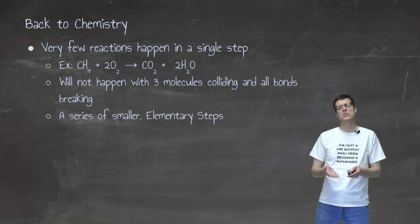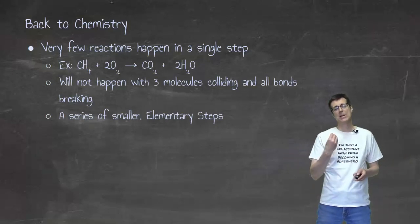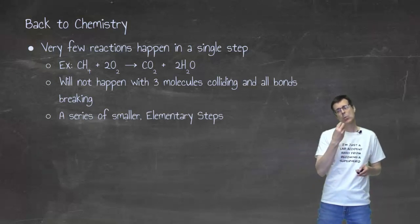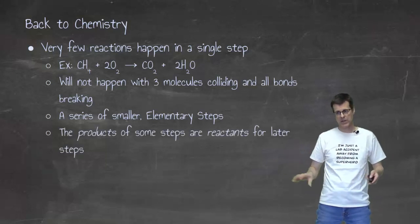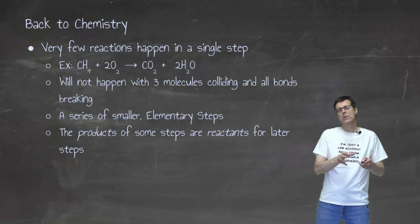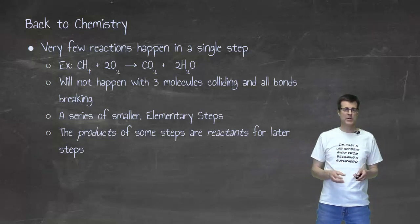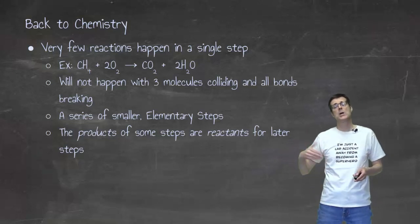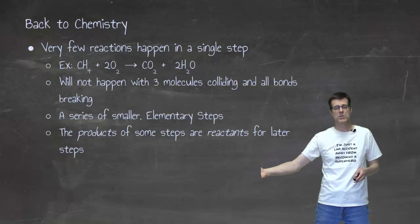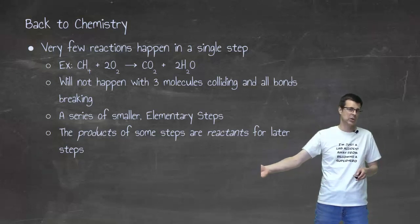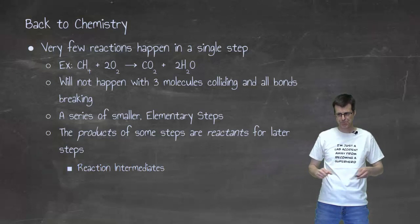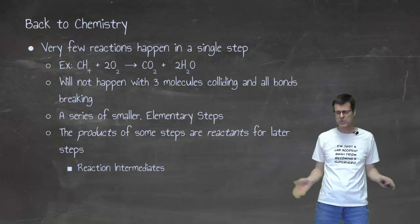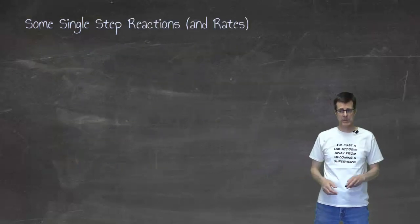We call those little steps elementary steps. When we take all those elementary steps combined, we will have our net reaction. One of the things about elementary steps is that, much like the sandwich, some of the things produced in earlier steps get used in later steps, and those are called reaction intermediates.